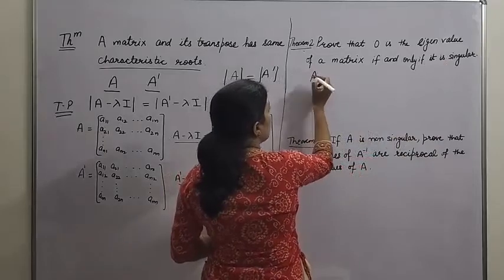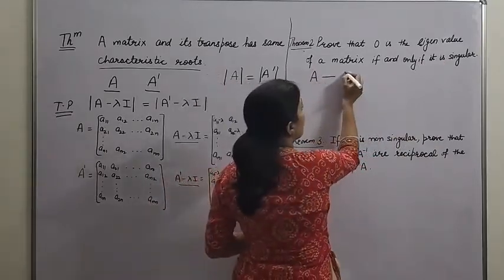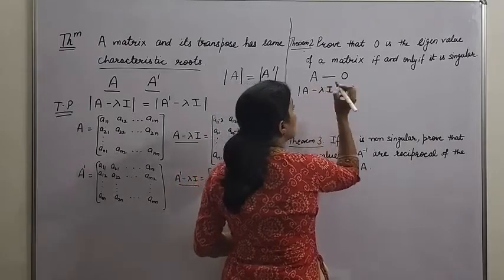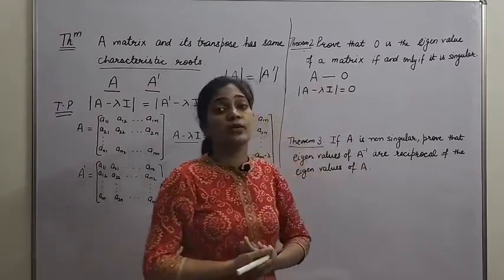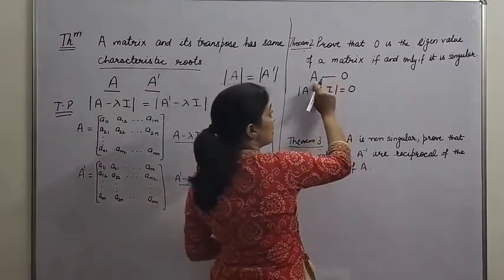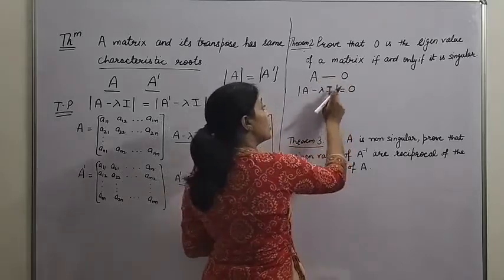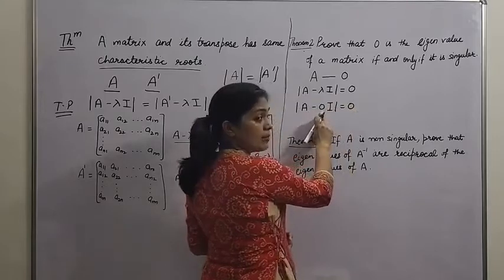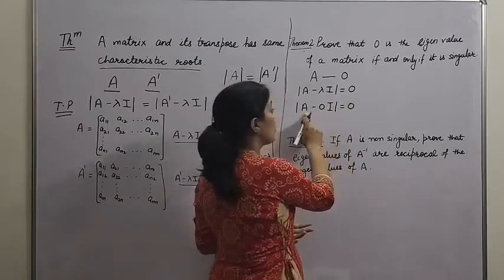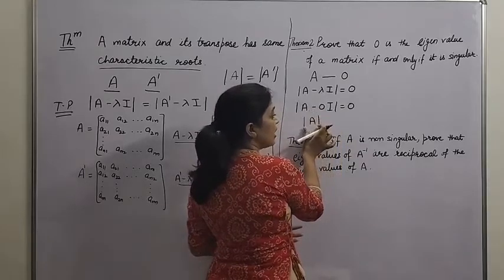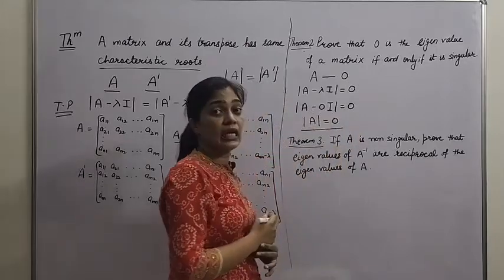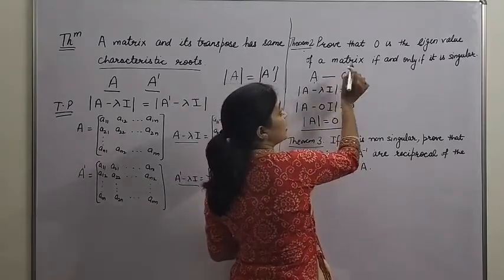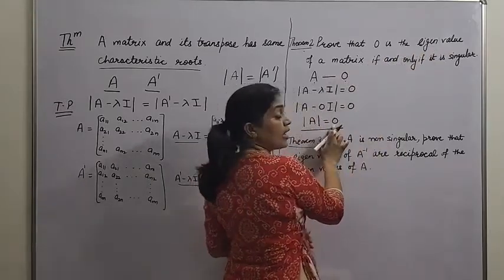In the proof, first we suppose there is a square matrix A whose eigenvalue is 0. Eigenvalues are the values of lambda that satisfy the characteristic equation det(A - λI) = 0. So if 0 is an eigenvalue, then putting lambda = 0 gives det(A - 0·I) = det(A) = 0. This proves that if 0 is an eigenvalue of this matrix, then this matrix is singular.